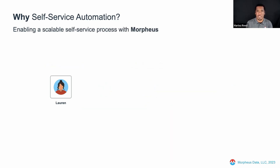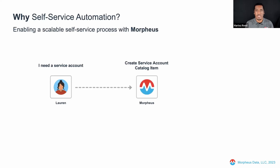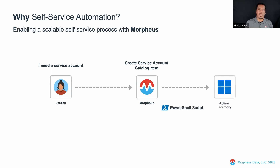So how does Morpheus help this process? Same scenario — Lauren needs a service account. Instead of going to Jane, Lauren can now leverage the Morpheus platform utilizing a self-service catalog item to request what she needs. She's been granted access to a catalog item in Morpheus that provides the ability to request a service account. Lauren goes into Morpheus, logs into the UI, accesses the catalog item, fills in the specific information needed, and it goes through the process — interacting with Active Directory and creating the service account. Lauren is able to fulfill her request in record time, without having to ping Jane or interrupt her from what she's doing.